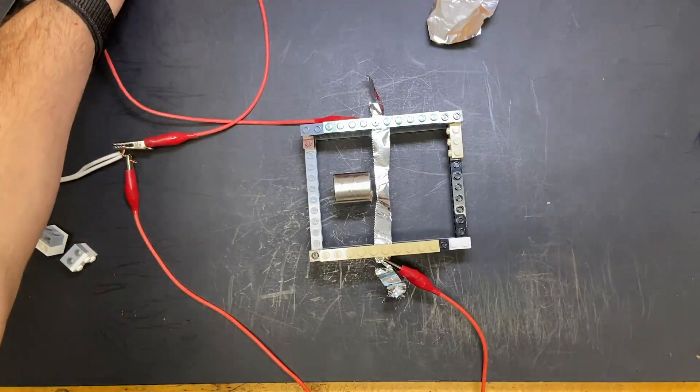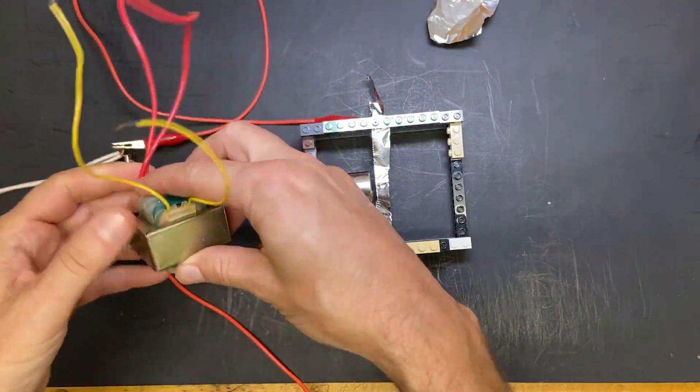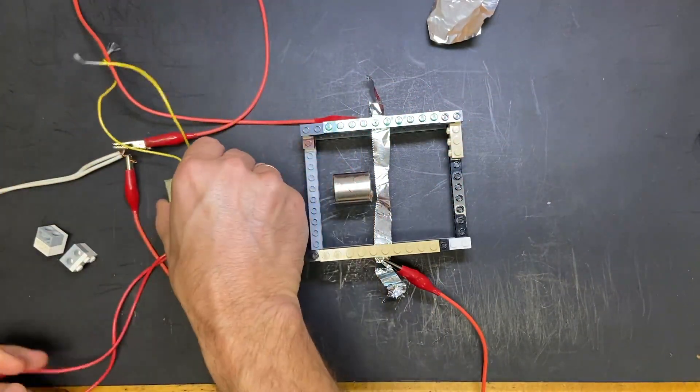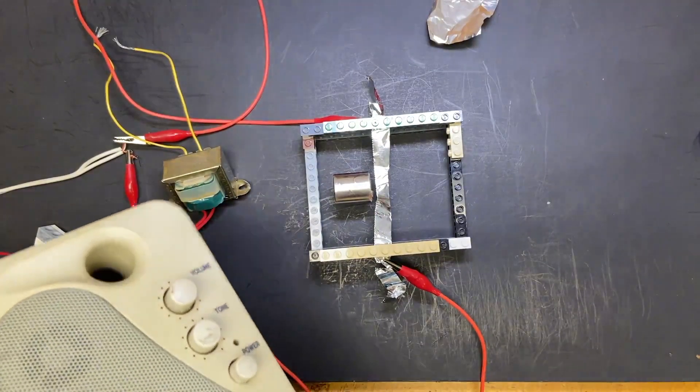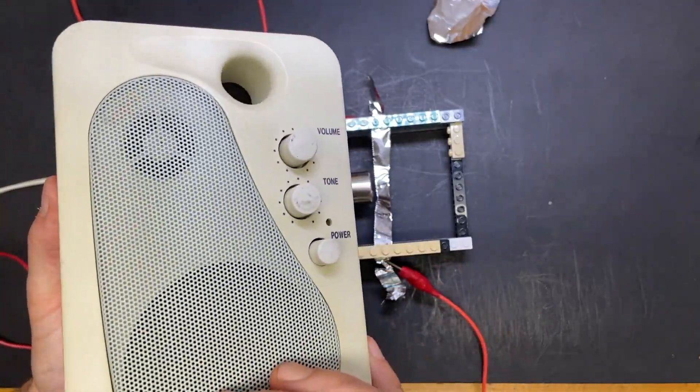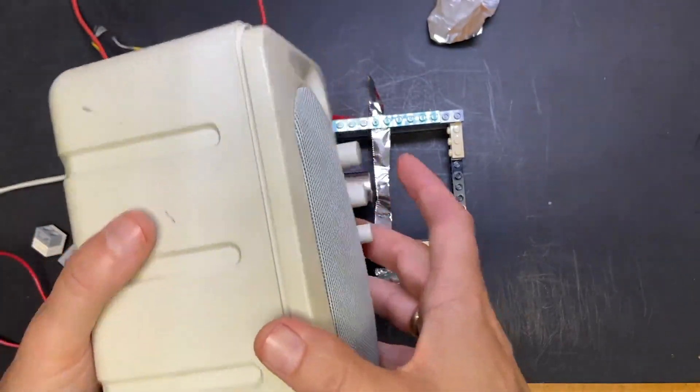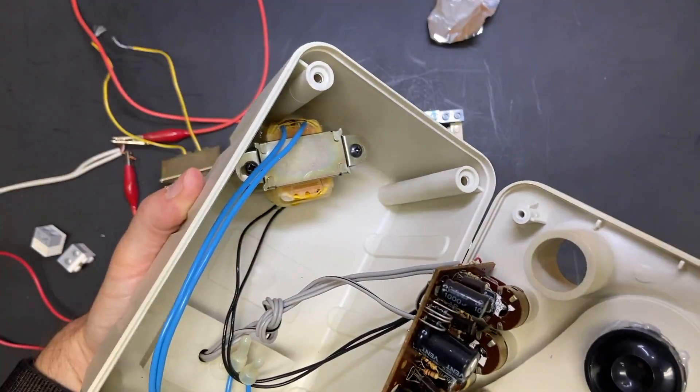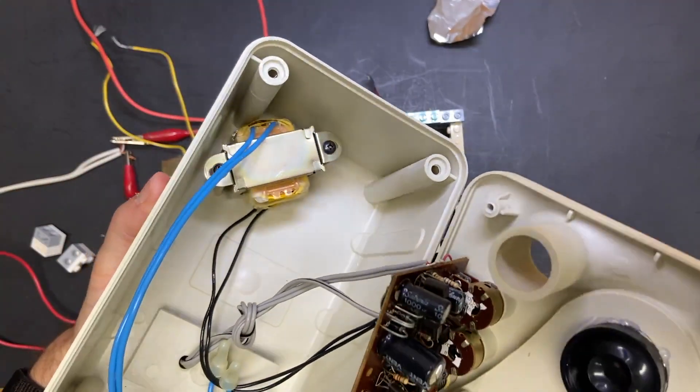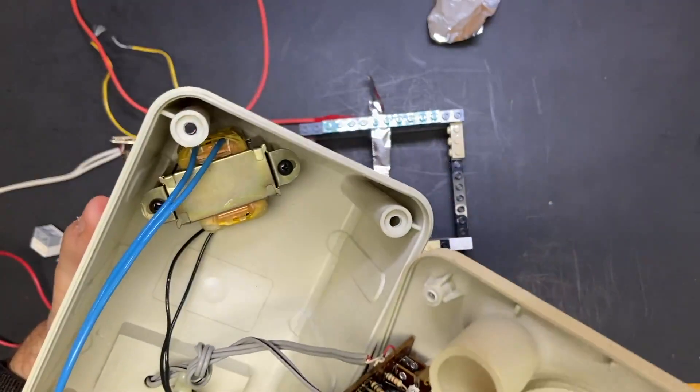And we can do that with this. This is an audio transformer. Let me show you actually where I got it from. So this is your basic computer speaker, old computer speaker. If you take the screws out, you can see the audio transformer in there. It actually fell off. That's exactly what I'm using.